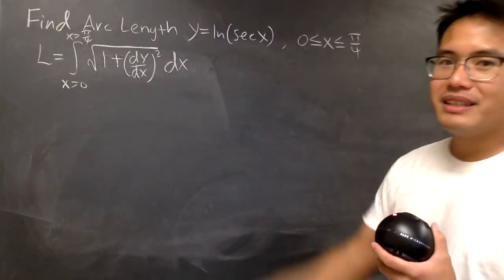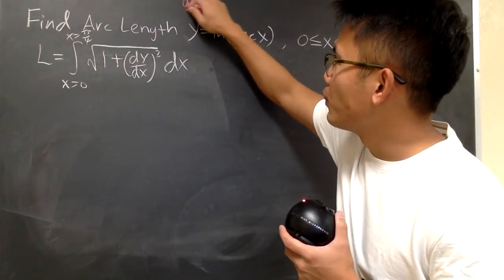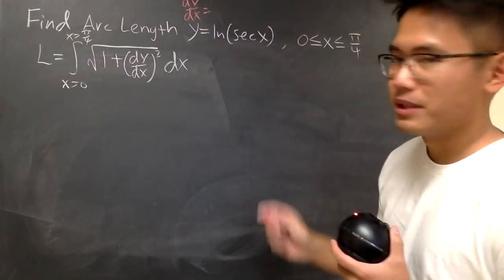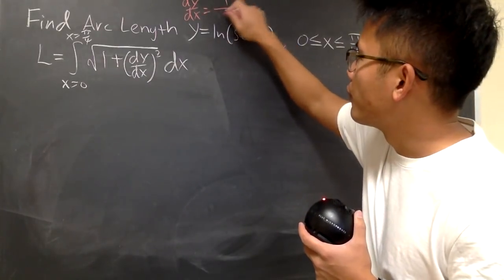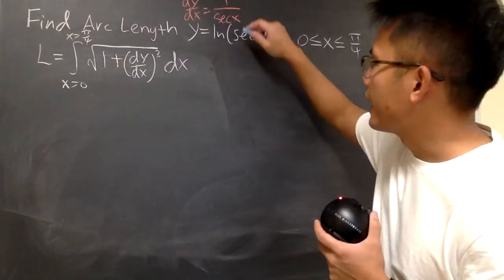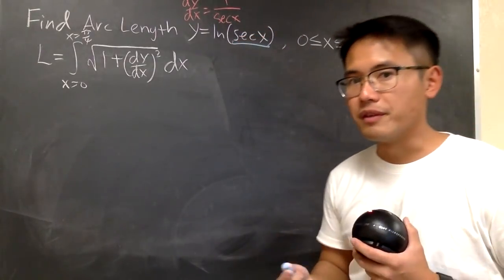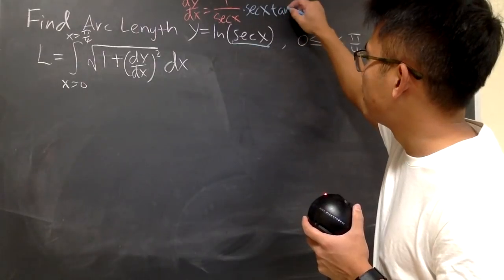Let's get the derivative right here. So perhaps I'll just save some space, put it on the top. dy/dx is going to be the following: when we have ln of this, we get 1 over the inside, which is sec(x). And don't forget the chain rule—multiply by the derivative of sec(x), which is sec(x)tan(x).